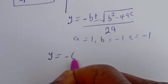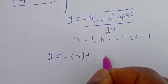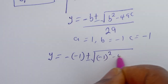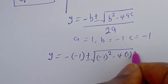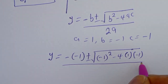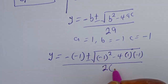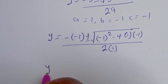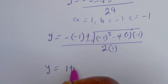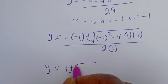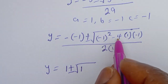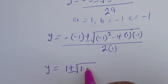Y is equal to minus bracket minus 1 plus or minus square root of minus 1 squared minus 4 multiplied by 1 multiplied by minus 1, over 2 multiplied by 1. Then Y equals 1 plus or minus square root of: minus 1 squared is 1, minus 4 times 1 times minus 1 gives plus 4.